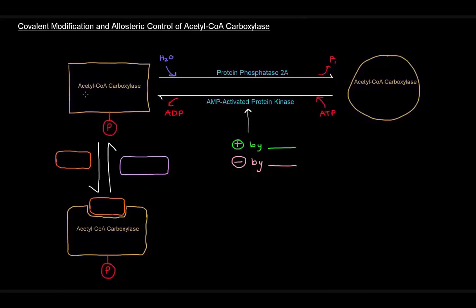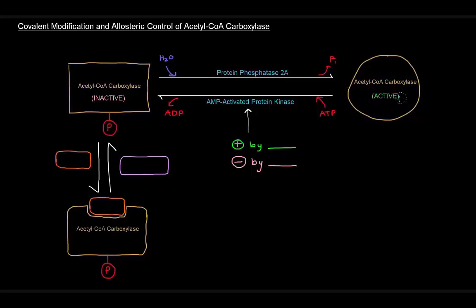In the top left, we have acetyl-CoA carboxylase in its T-state — its inactive form. Its inactive form is actually phosphorylated, meaning it carries a phosphate group. To activate it and get it into its R form (active state), the phosphate needs to be removed by protein phosphatase 2A. To return to the inactive form, a protein kinase needs to add that phosphate back on from ATP.